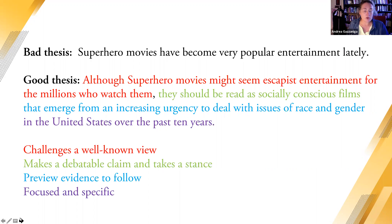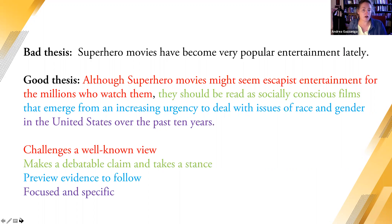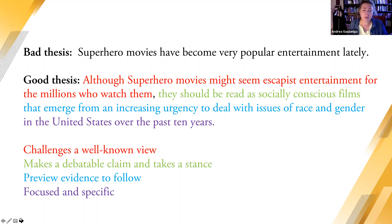The blue portion here is previewing what kind of evidence we're going to find when we read the essay — we'll have an expectation of understanding how the issues of race and gender are becoming more urgent. And then finally, the purple portion — "in the United States over the past 10 years" — is very focused and specific, referring to a very specific place and a very specific time.